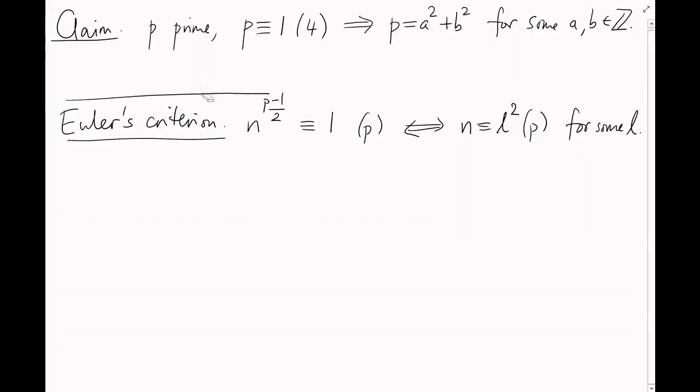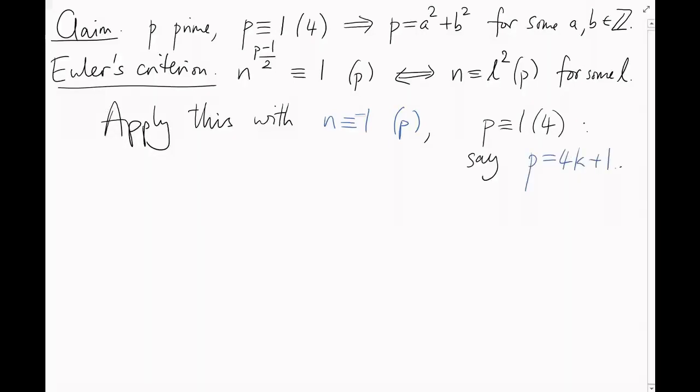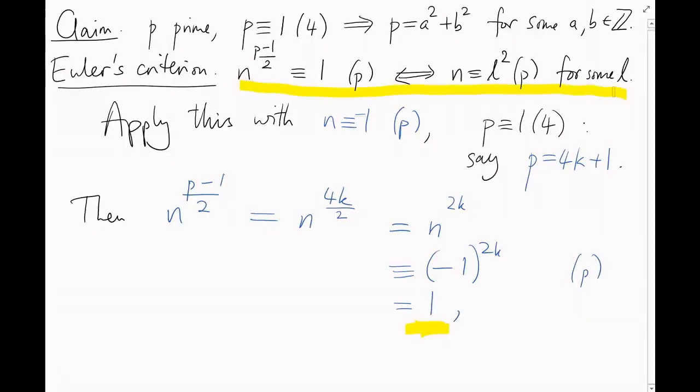Okay, finally, let's apply this lemma with n equals minus 1, and p is 1 mod 4. Let's say p is 4k plus 1. We know that n to the (p-1)/2 is either plus or minus 1, which is it? Well, (p-1)/2 is 2k, which is even, and minus 1 to an even power is 1. So, our lemma tells us that there exists some l such that l squared is minus 1 mod p. In other words, p divides l squared plus 1. Keep this in mind.